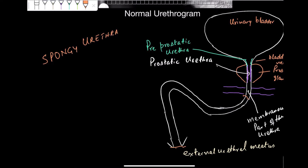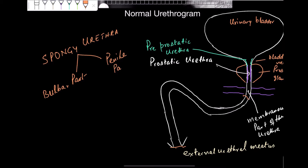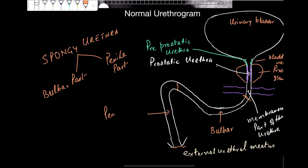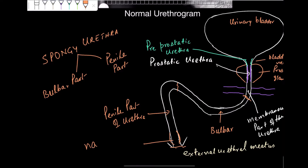Now the spongy urethra is further divided into two parts. It has a bulbar part and a penile part. So from this point to this point, this is the bulbar part of the urethra, and this vertical portion we call it penile part of urethra. And before terminating it balloons up a little bit, and that is called navicular fossa.